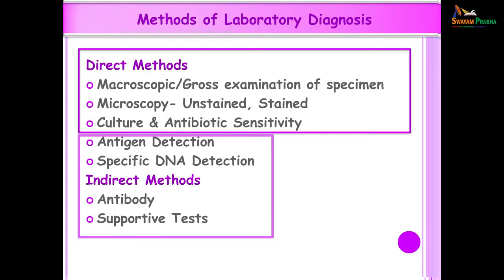In our previous lecture, these were the methods of laboratory diagnosis. There are direct methods and indirect methods, and in the previous lecture culture and antibiotic sensitivity tests were covered. Today we are going to be concentrating on antigen detection tests, specific DNA detection, indirect methods which involve detecting antibodies, and of course supportive tests.